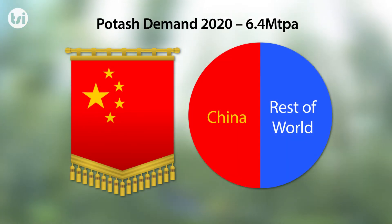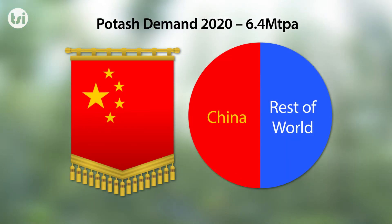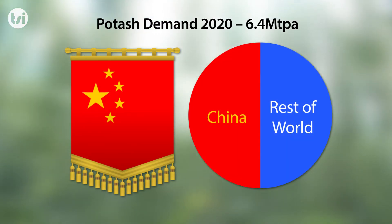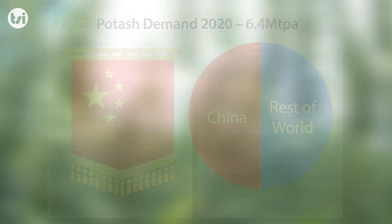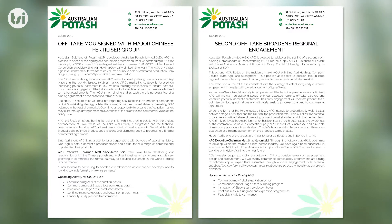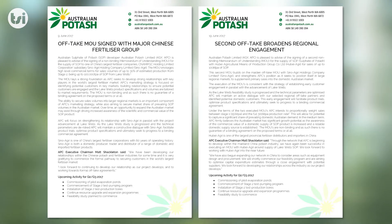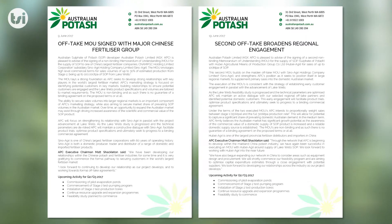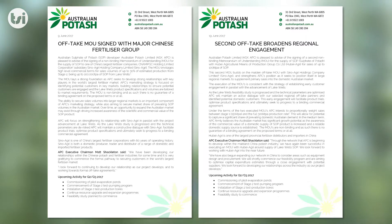With predictions that by 2020 China will consume around 50% of global supply. And it is for this reason Australian Potash has begun negotiations with Chinese parties, as they recently signed two non-binding MOUs with groups in the country.